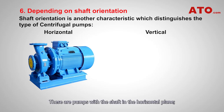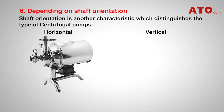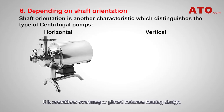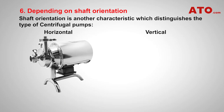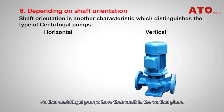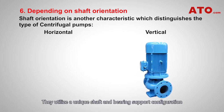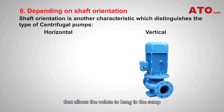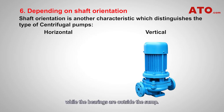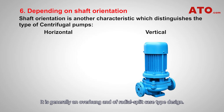Horizontal pumps have the shaft in the horizontal plane and are popular due to ease of servicing and maintenance. They are sometimes overhung or placed between bearing design. Vertical centrifugal pumps have their shaft in the vertical plane. They utilize a unique shaft and bearing support configuration that allows the volute to hang in the sump while the bearings are outside the sump. They are generally of overhung and radial split case type design.